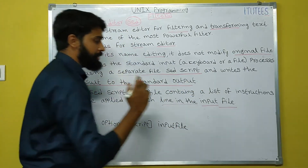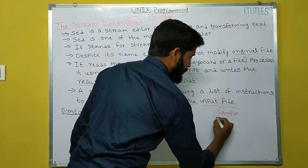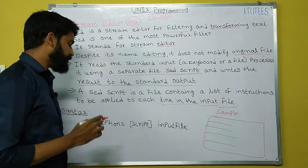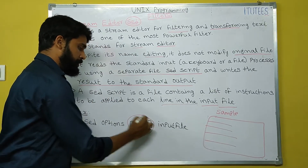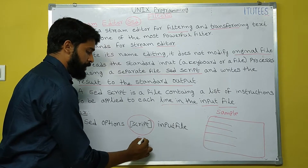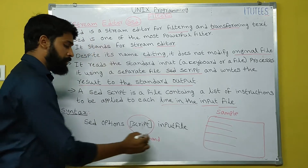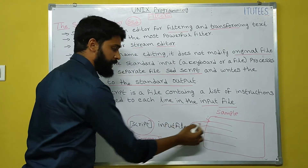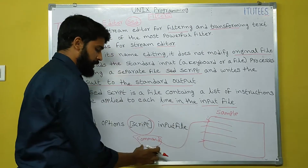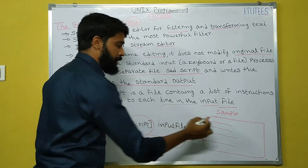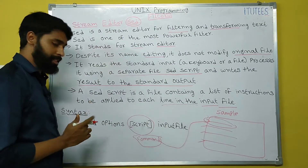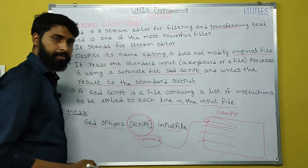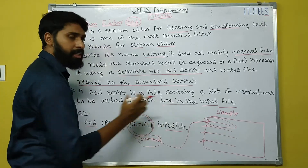So what does this mean? For example, the file name is sample. Let us assume there are four lines. You write one script — the script is nothing but a command, instruction, or some pattern. This command is applied on each line in the file: first line, second, third, fourth. If the command or pattern matches a line, that line is printed on the monitor. The syntax is: SED, options, script, and input file — you apply this script on each line in the input file.